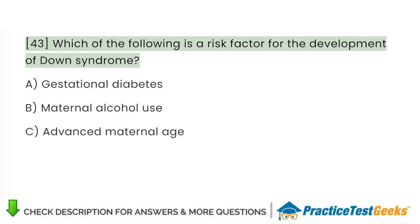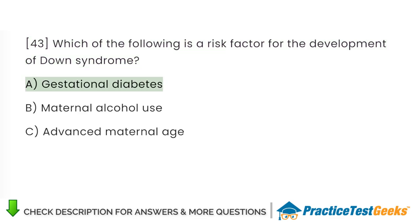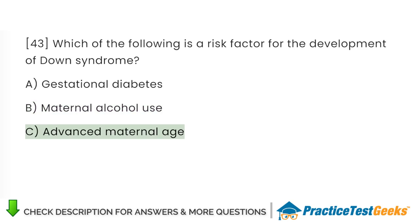Which of the following is a risk factor for the development of Down syndrome? A. Gestational diabetes. B. Maternal alcohol use. C. Advanced maternal age.